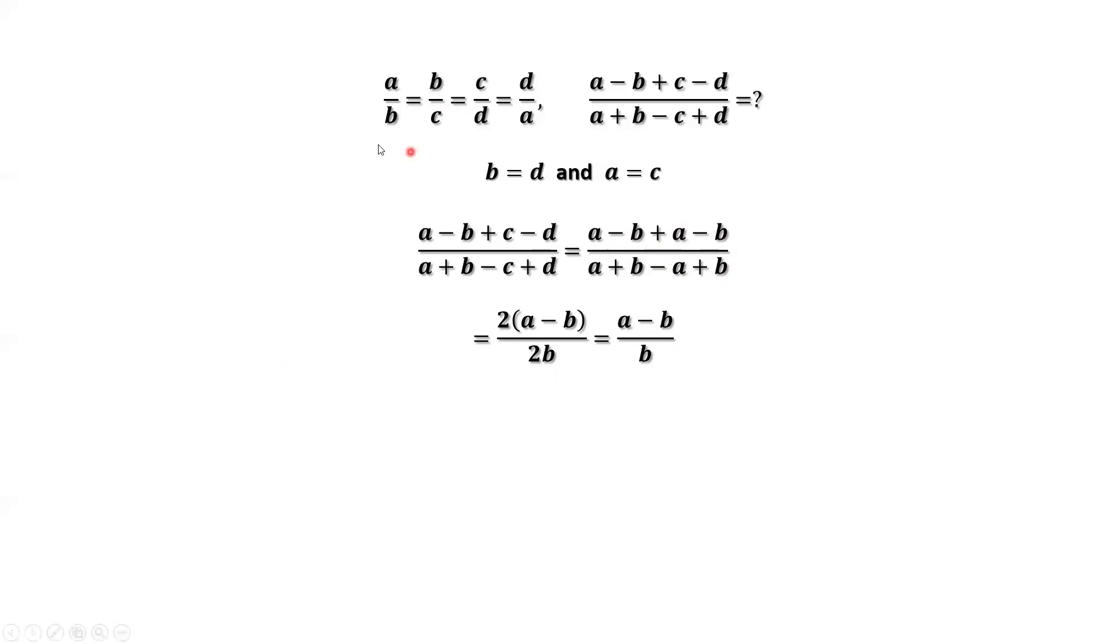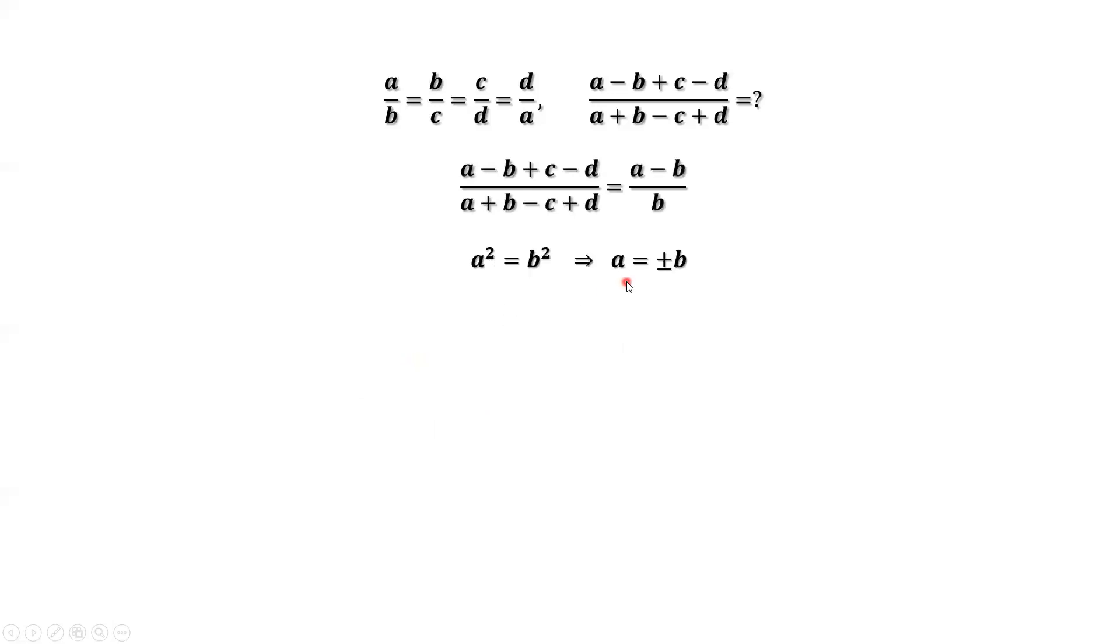From the first given condition and the result A equals C, we replace C by A. We have A over B equals B over A. This implies A squared equals B squared. Taking the square root of both sides, we have A equals positive or negative B.